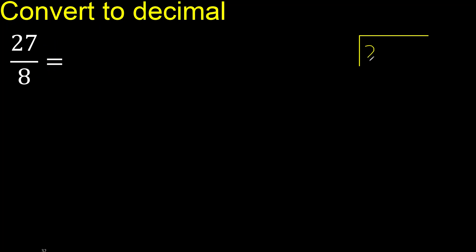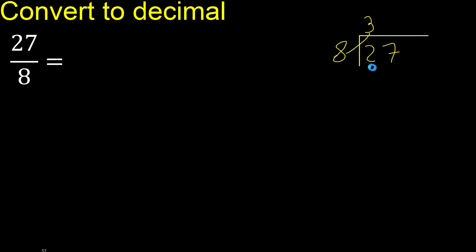27 divided by 8. 2 is less, therefore next: 27 is not less. With 27, 8 multiplied by which number is nearest to 27 but not greater? 8 multiplied by 4 is 32 — 32 is greater. 8 multiplied by 3 is 24. 24 is not greater. 27 minus 24 is 3. There is no next digit, therefore bring down a zero.